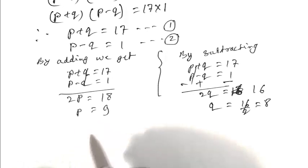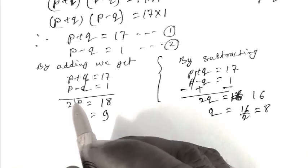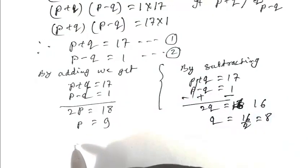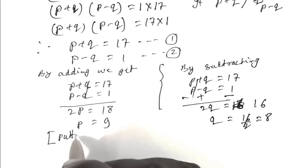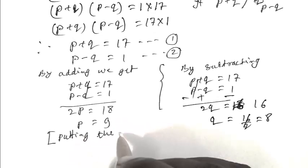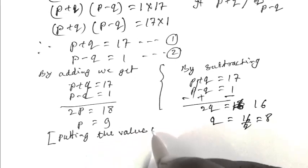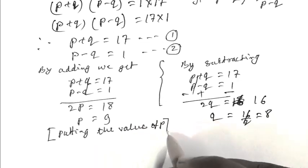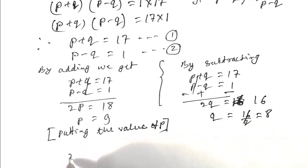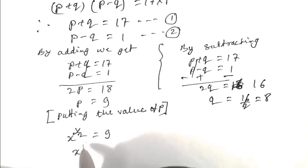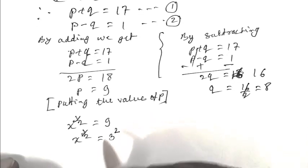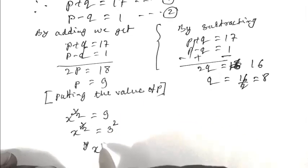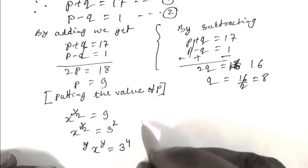Putting in the value: p equals x to the power y by 2 equals 9, that is x to the power y by 2 equals 3 squared. Squaring both sides, x to the power y equals 3 to the power 4.